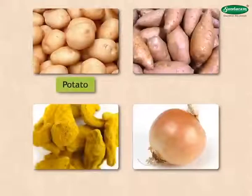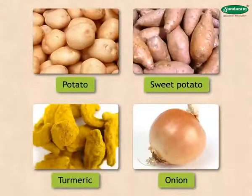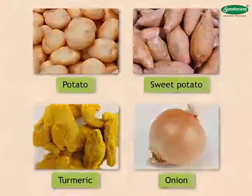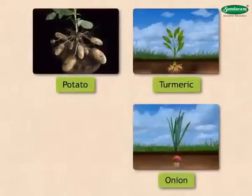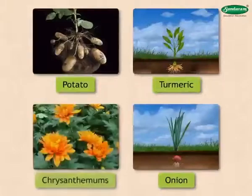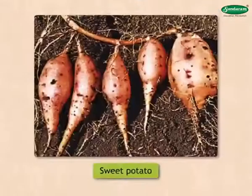Vegetative reproduction from the root and stem: when we bury a potato, sweet potato, onion, or turmeric in the ground, a new plant begins to grow from them. Potato, turmeric, onion, and chrysanthemums are underground stems, while sweet potato is a root. They carry out the function of vegetative reproduction.